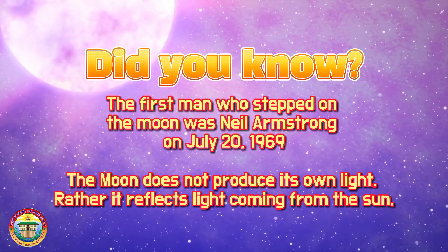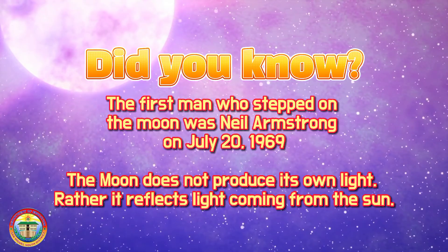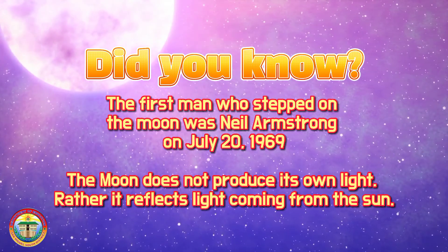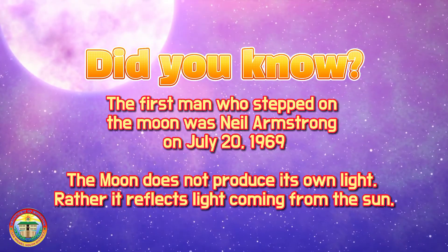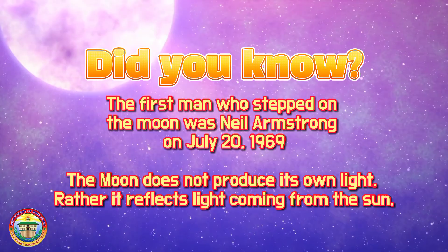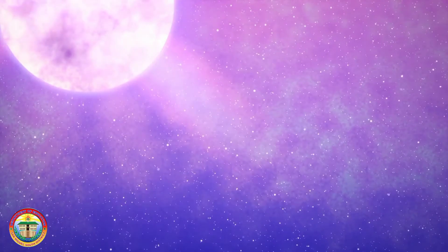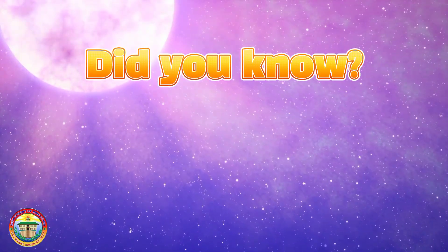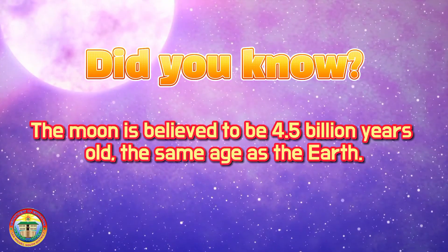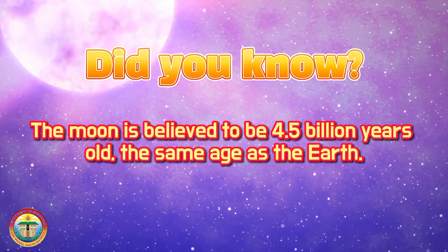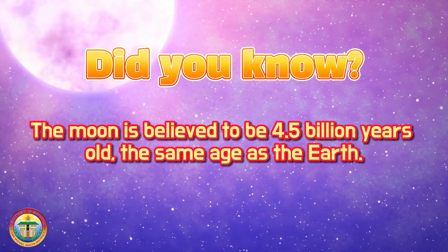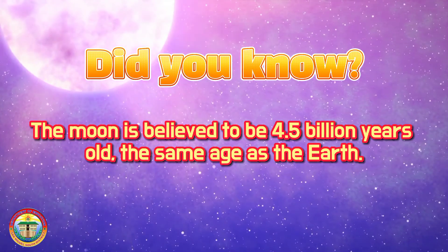The Moon does not produce its own light. Rather, it reflects light coming from the Sun. Did you know the Moon is believed to be 4.5 billion years old — the same age as the Earth?